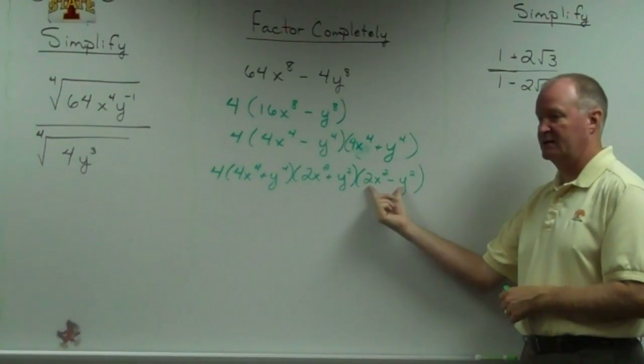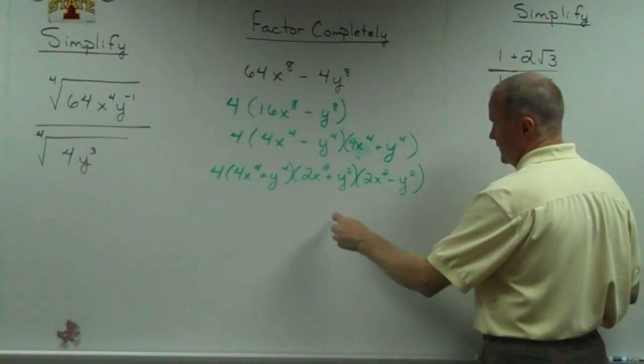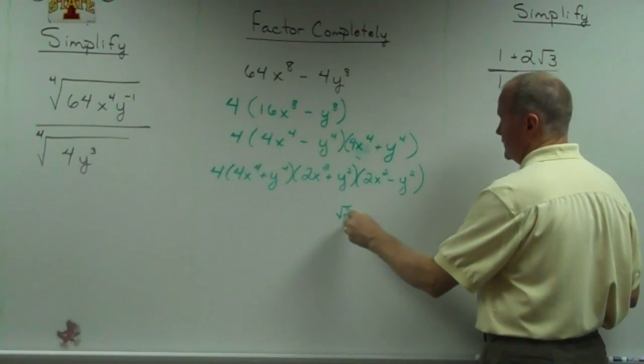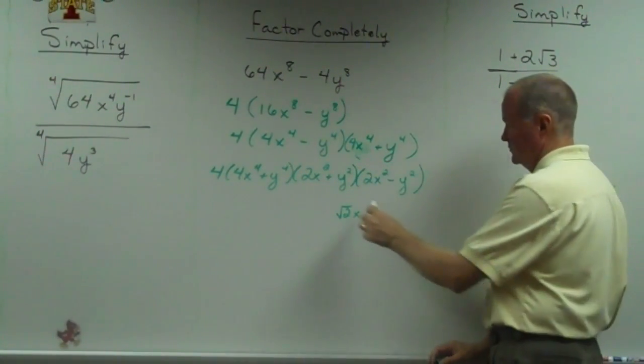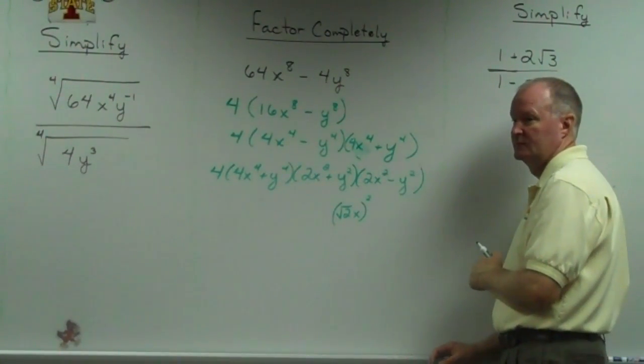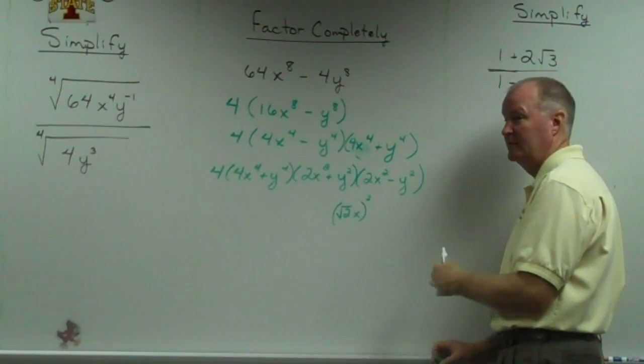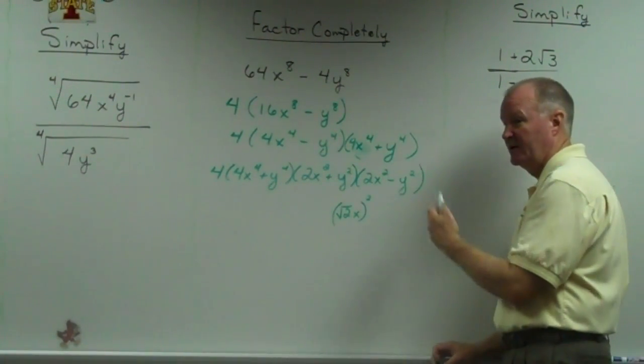Right now you wouldn't necessarily break this down. But this is the square root of 2 times x squared. Not something you would normally do. Now, coming up later on,